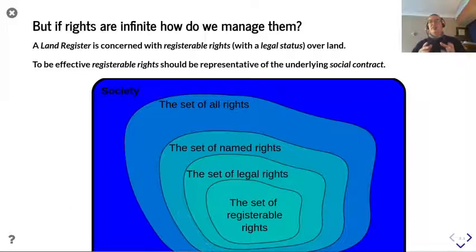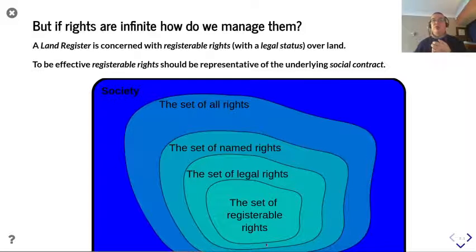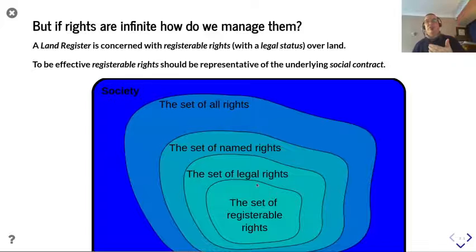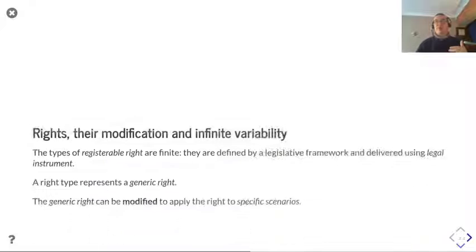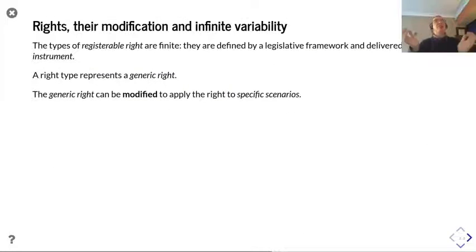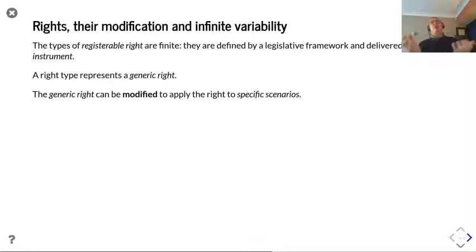As a right starts to gain more social momentum, it goes through these stages until it gets to the stage of being not just a legal right, but a legal right which is enshrined within the legislative framework. And so you can add to your broad group of legal rights. That then means that you have a list of registrable right types, and they are finite because they're described by the legislation.